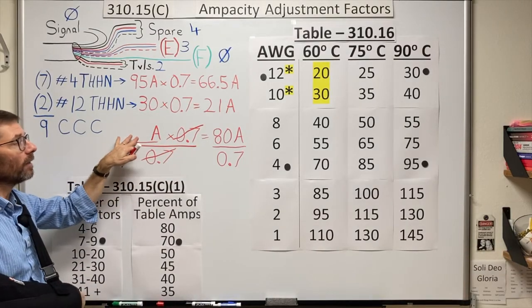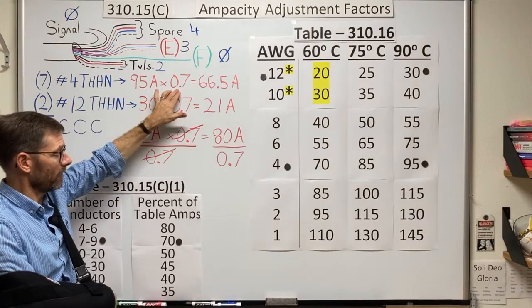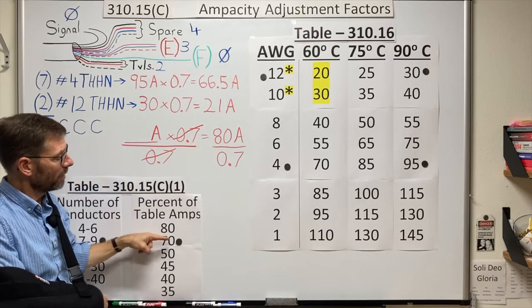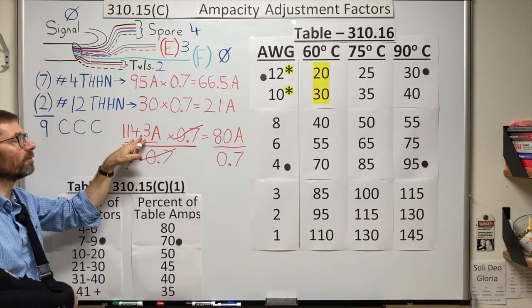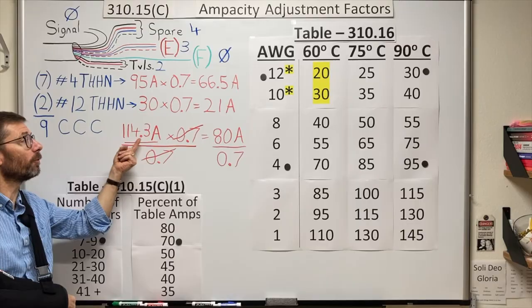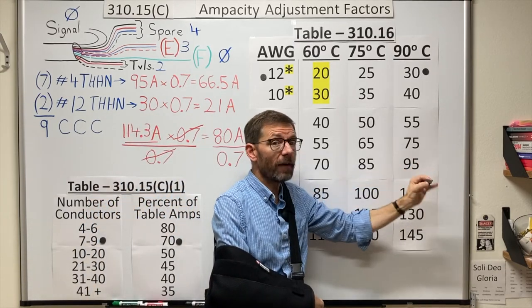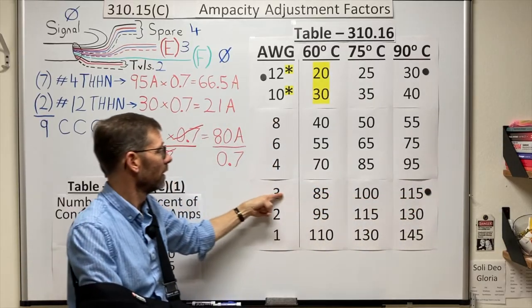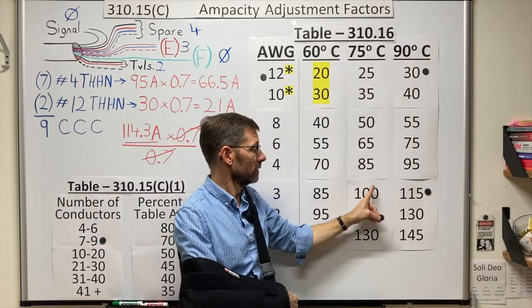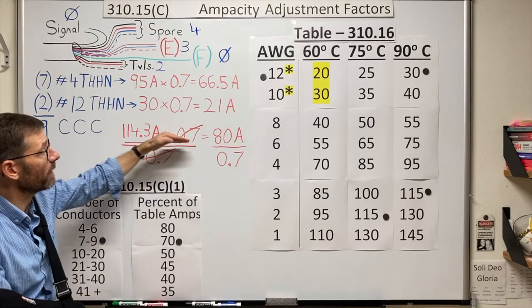So whereas the original way we took the conductor's ampacity times the factor from the table, here we take our desired outcome divided by the factor from the table to get 114.3 amps. That's the starting point. I need a conductor that can carry 114.3 amps at least before the derating. So a number four is not big enough. If I have a 90 degree conductor, I go down this column, that'll work. A number three would be adequate. Or if I had a 75 degree rated conductor, I would have to go up to a number two in order to have a large enough conductor. So you can choose which method suits your circumstances.